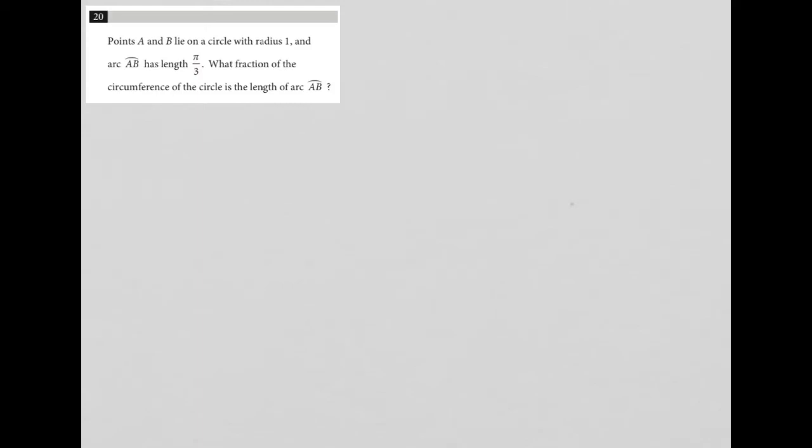This question says points A and B lie on a circle with radius 1. So I'm going to draw my circle, have a point A, have a point B, and a center, and call that a radius of 1.